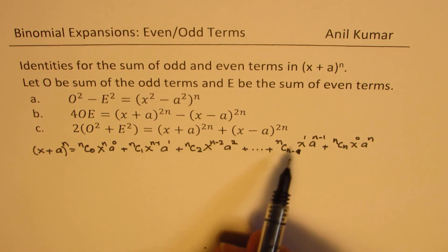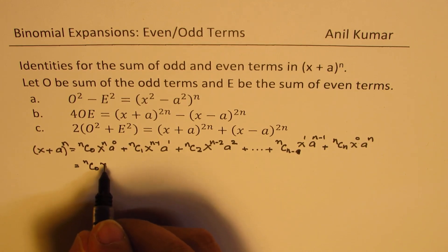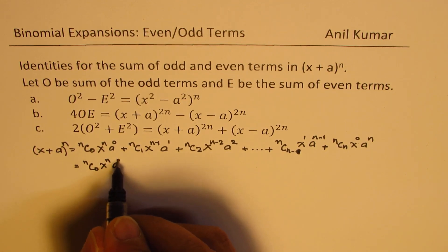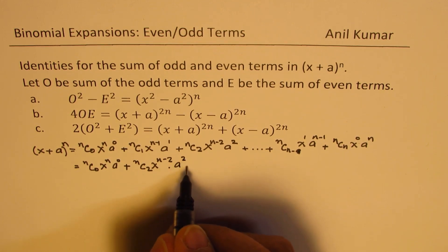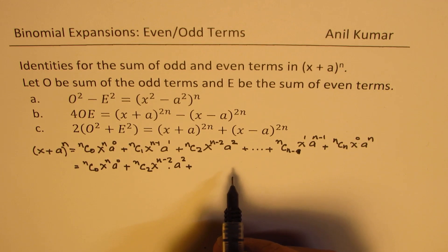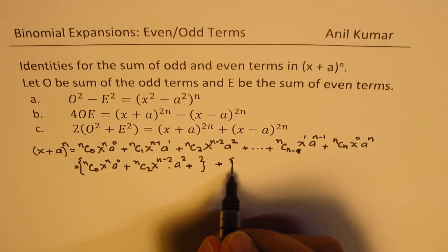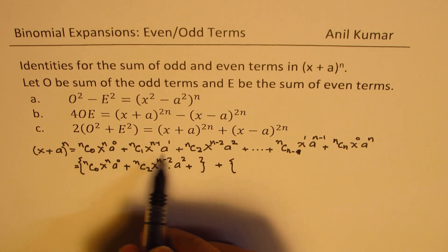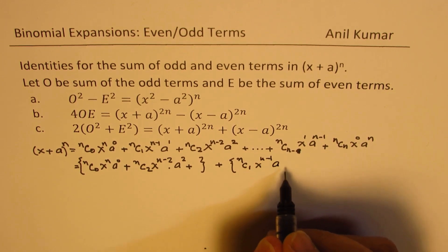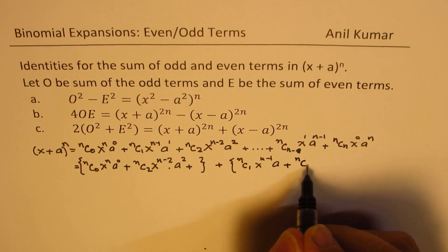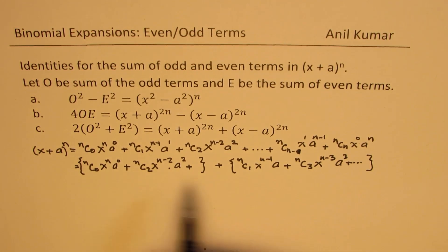These terms are your odd-numbered terms: t1, t3, t5, and so on. We can club the odd-numbered terms as nc0·x^n·a^0 plus nc2·x^(n-2)·a² and so on. The even-numbered terms — term number 2, 4, 6 — are nc1·x^(n-1)·a^1 plus nc3·x^(n-3)·a³ and so on. That gives us two different series.